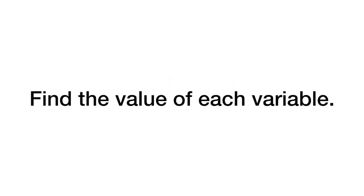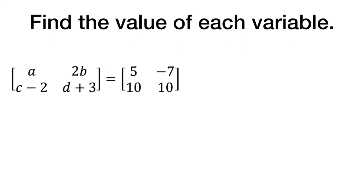Now let's try this. We want to find the value of each variable. Now when we have variables, just remember, A is the equivalent spot as 5, 2B is negative 7, and so on and so forth. So I can already say that A equals 5. But now we need to solve. So I know that 2B equals negative 7, which means 2B may be negative 7, but our answer is not 2B. So I divide by 2. B equals negative 3.5.